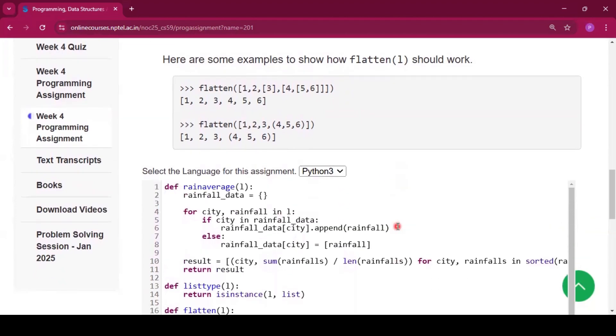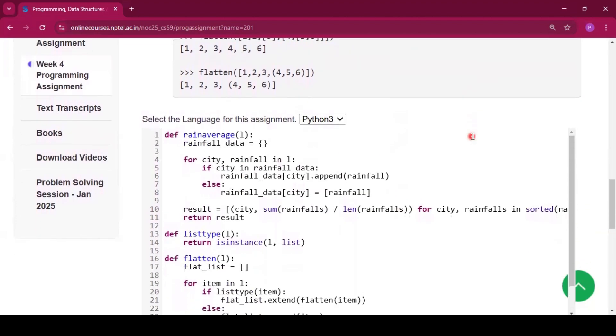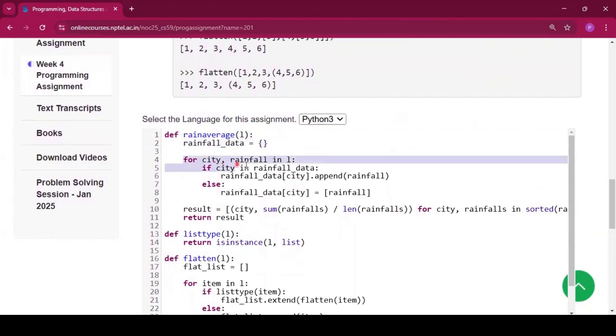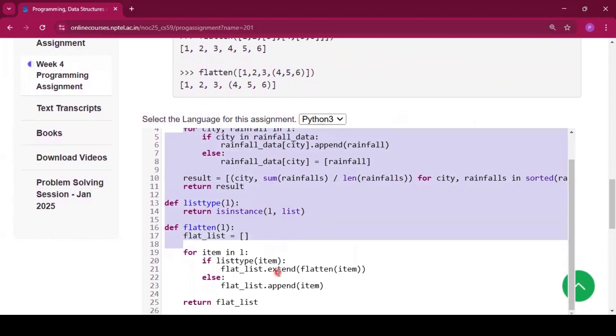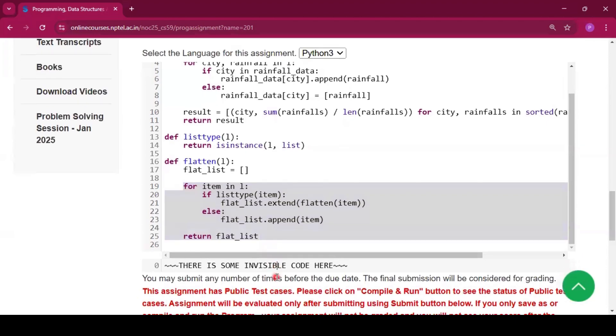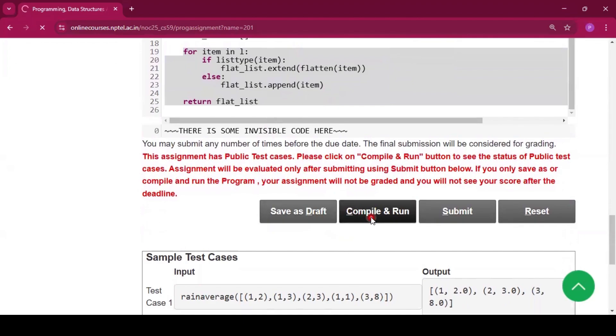This is the function: def rainaverage(rainfall_data): return {city: ... for city in ...}. So this is the function. Now after writing this function, you have to click compile and run.